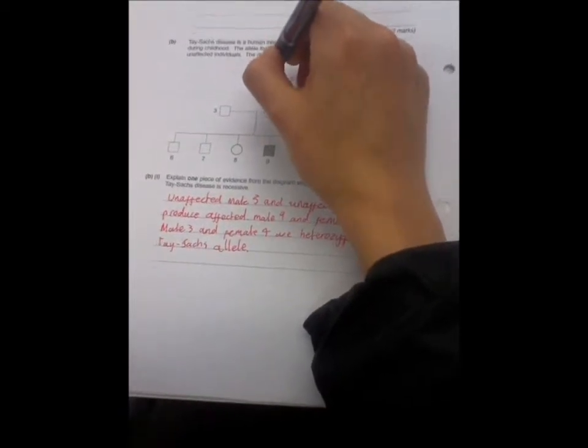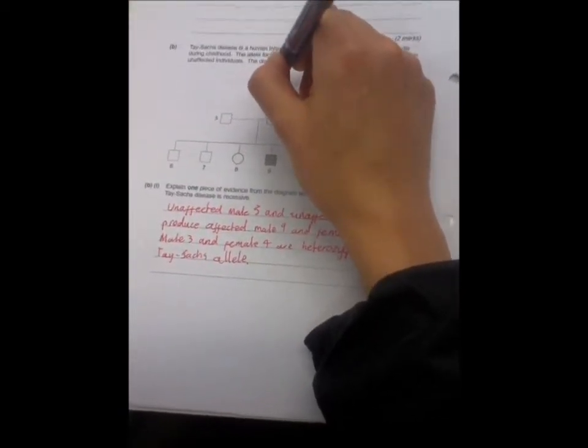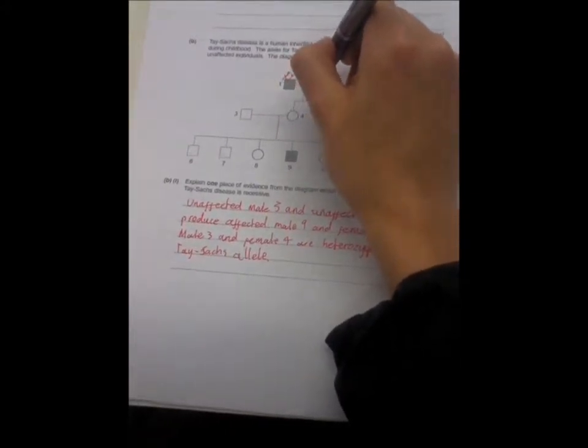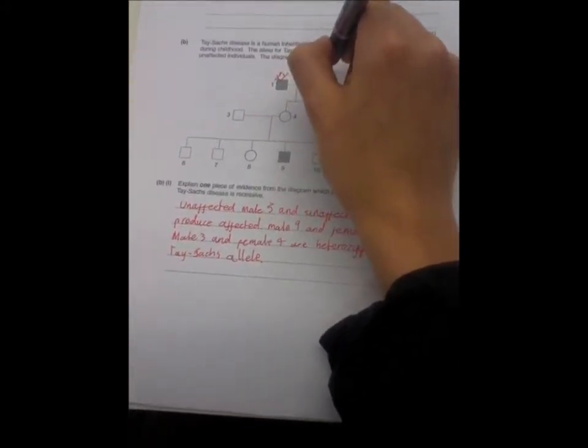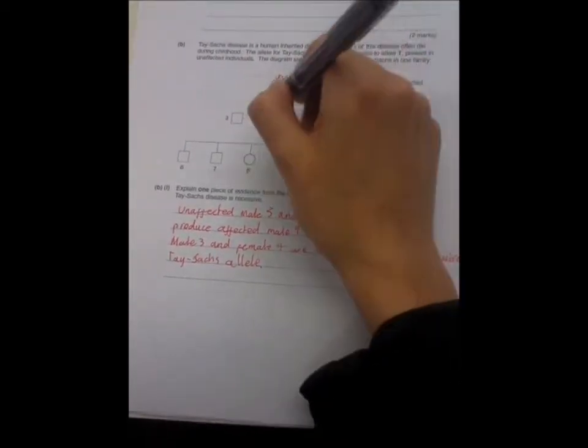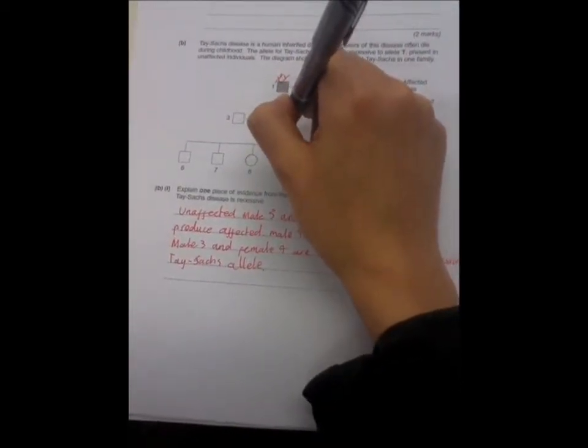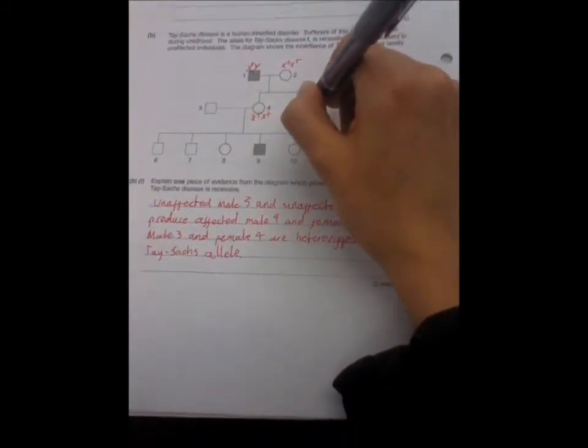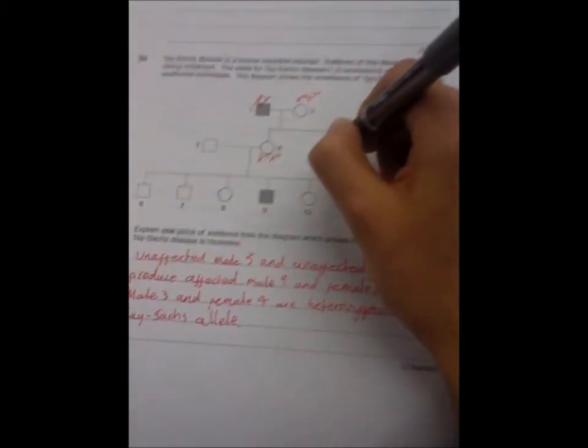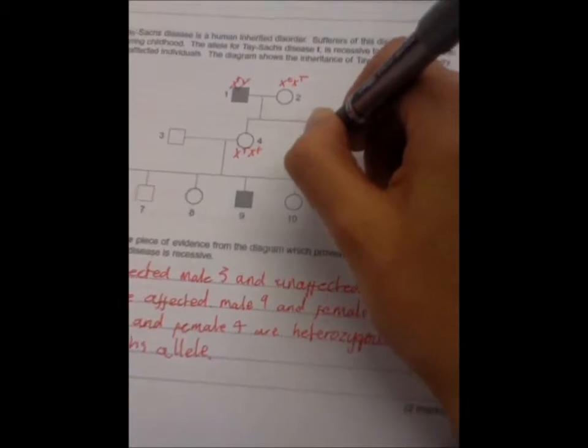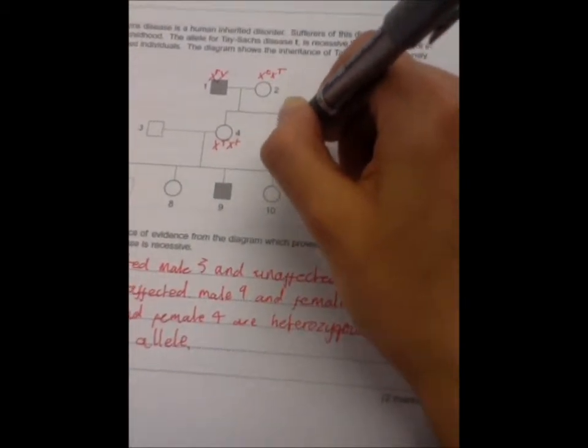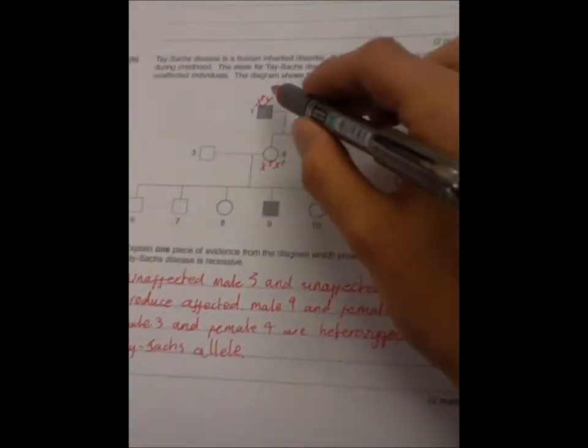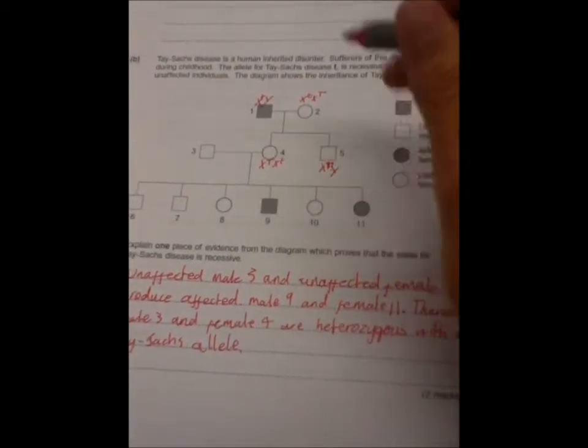So that would be XY with a little t. That would be small t, big T. That one again would be big T, little t. This one we don't know. Oh, actually, of course, we do know that would be big T, Y. So, Y and big T from the male and female.